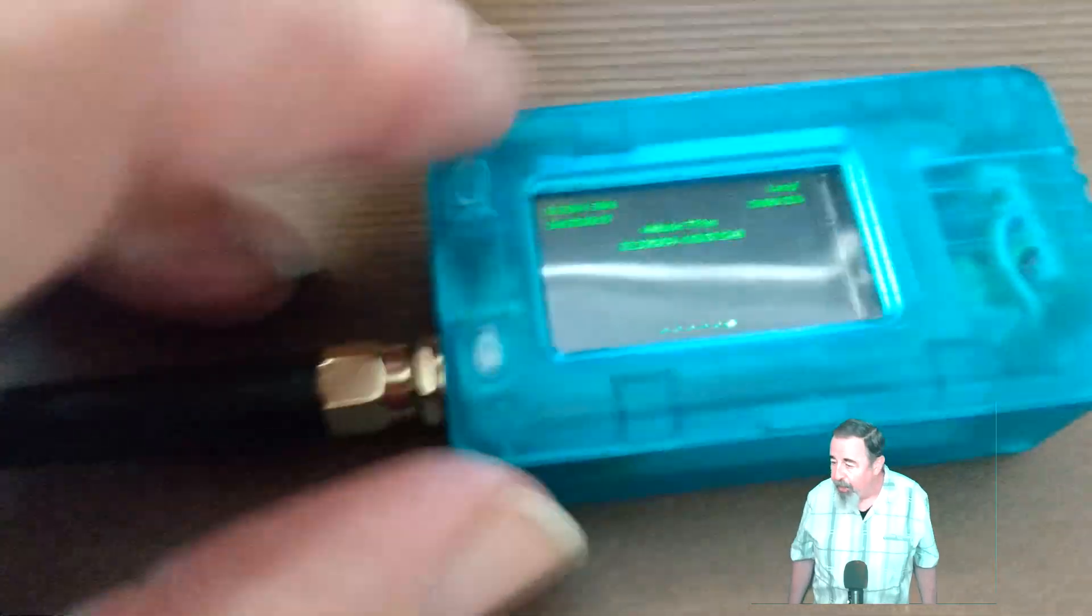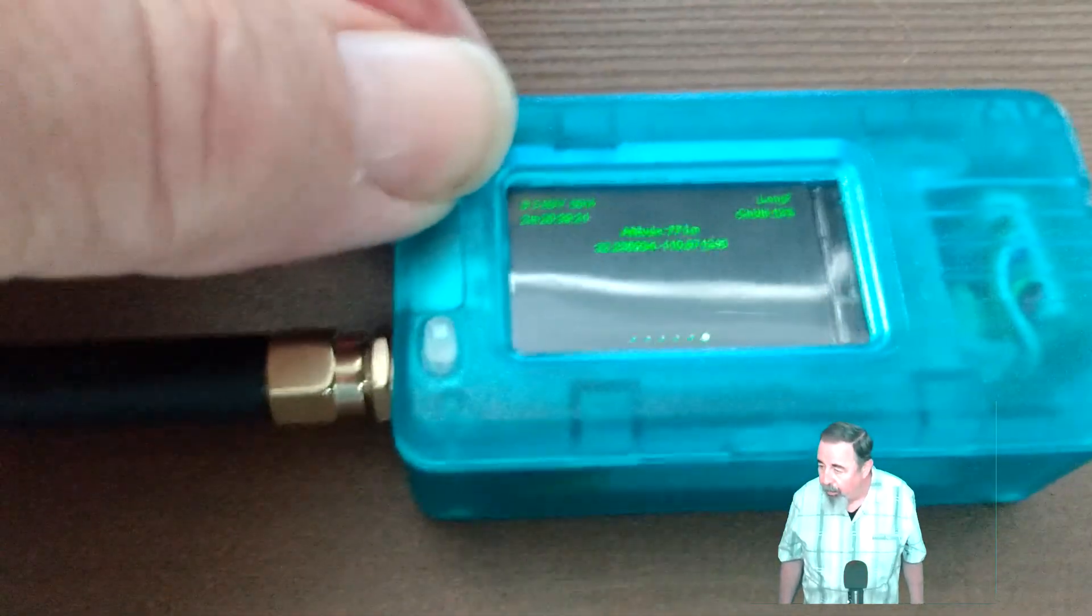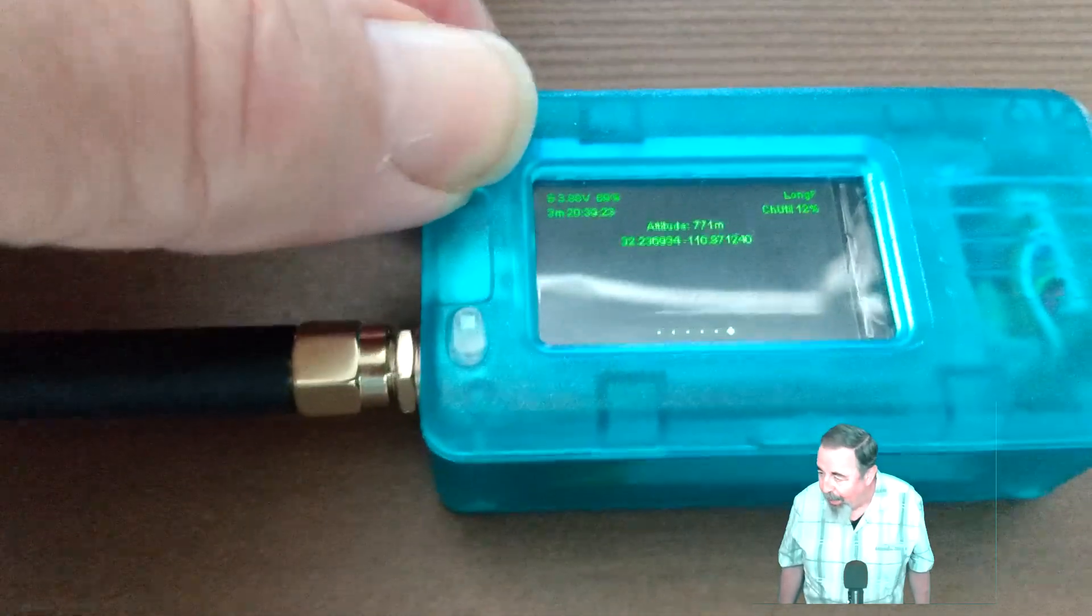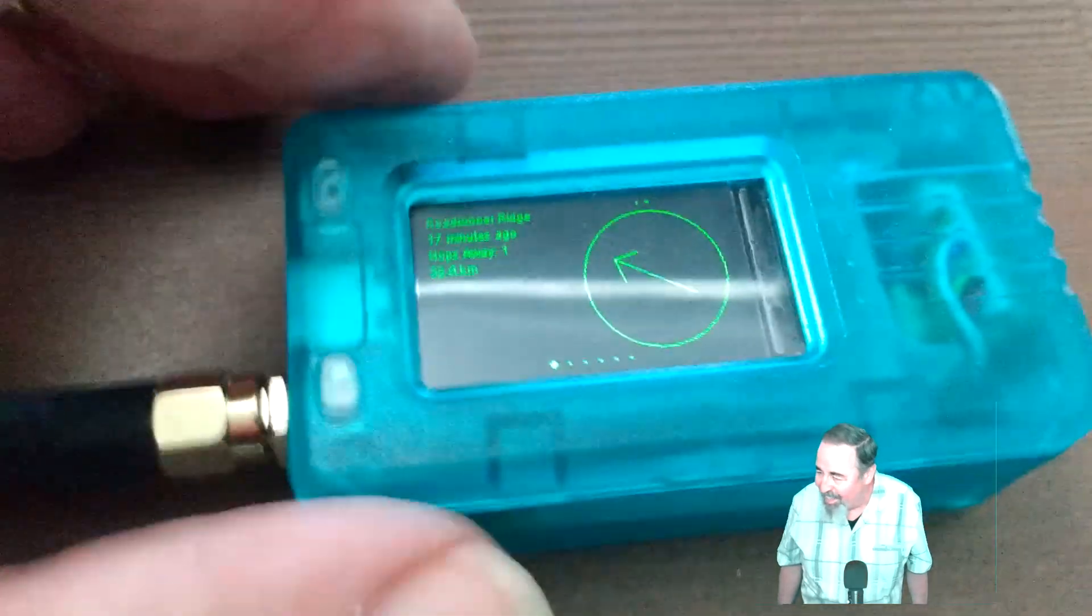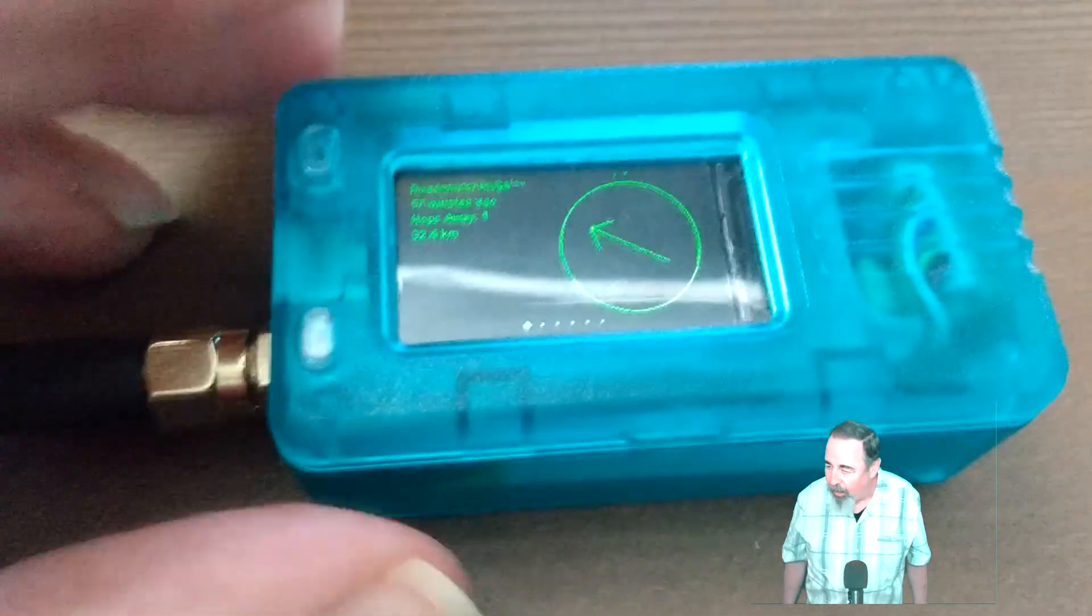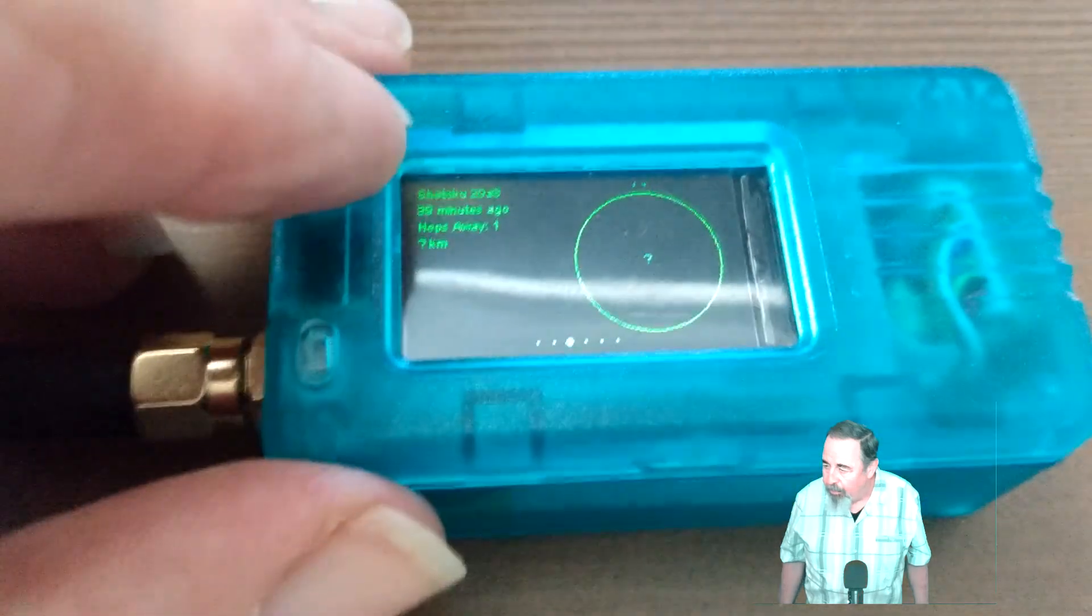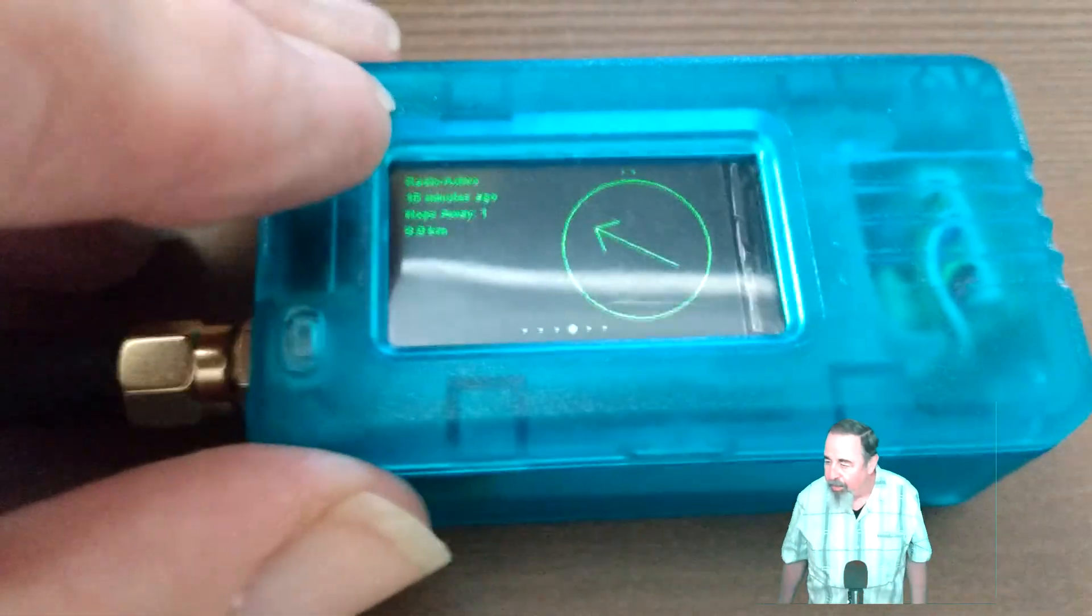So when I finally saw the GPS started working, we took it out on the road. You can look up those coordinates. It's not my house. See if you can figure out where I'm at. And what's cool about having a GPS is you can see how far away the other nodes are and what direction they are.